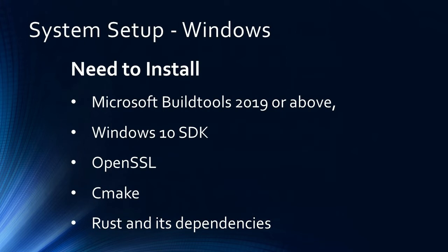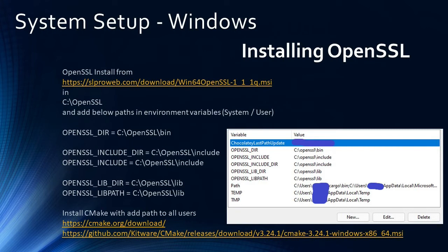On Windows, you have to install some additional software like OpenSSL, CMake, and Build Tools. You also need to install Rust and its dependencies on all systems. On Windows, you can install OpenSSL and CMake using the package manager, and you must add the path variables to your environment variables, either in system or user variables. I have shown the format and locations on screen.